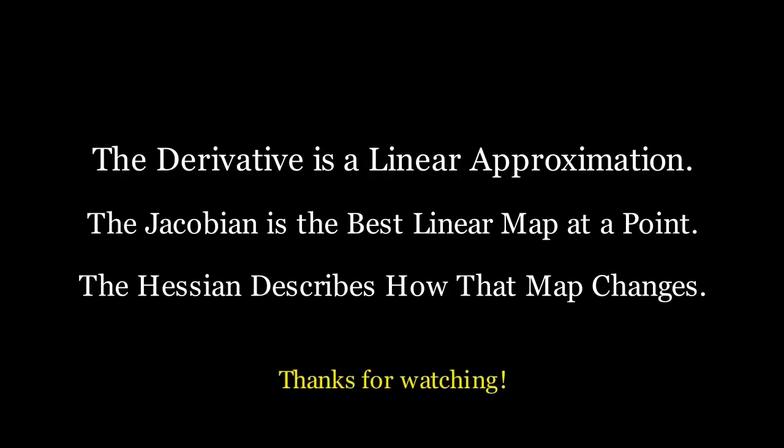So what we learned was that the derivative is actually a linear approximation. The Jacobian is the best linear map at a point. The second derivative which is called the Hessian matrix describes how that map changes. And that's the end of the video for today. Don't forget to subscribe and follow. Thanks for watching.